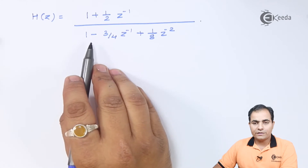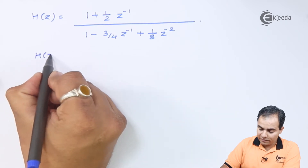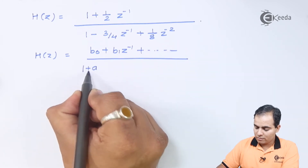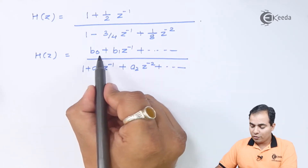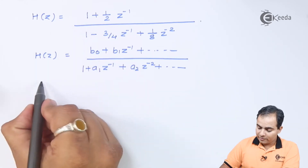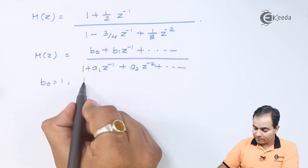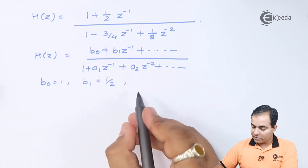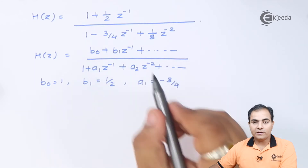This is our H(z) equation. Comparing the numerator coefficients with the standard transfer function form: b₀ equals 1 and b₁ equals 1/2. Similarly, from the denominator, a₁ equals minus 3/4 and a₂ equals 1/8.